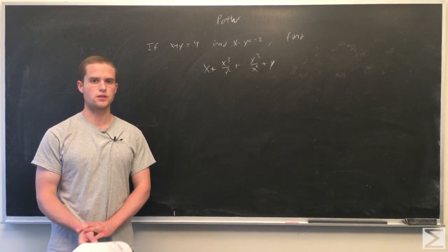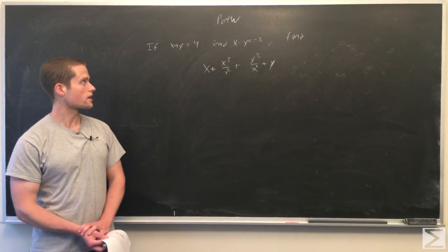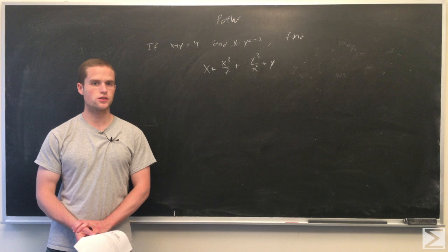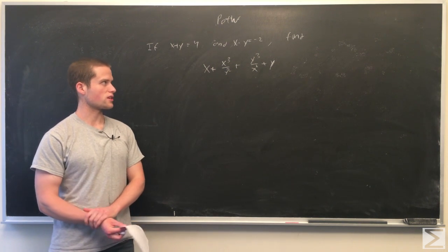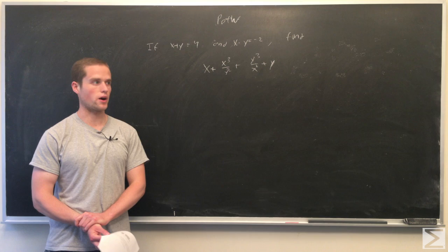Welcome to the Center of Maths Problem of the Week for this week's problem. We're given that x plus y equals 4 and x times y equals minus 2. We want to find the value of this expression, which is x plus x cubed over y squared plus y cubed over x squared plus y.